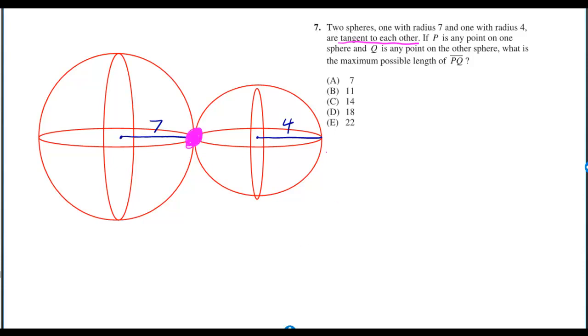When they say that they're tangent to each other, that means they hit each other at one point. If I put p and q where I have them, that's going to create the maximum possible length of pq. That length is seven times two plus four times two, which is twenty-two.